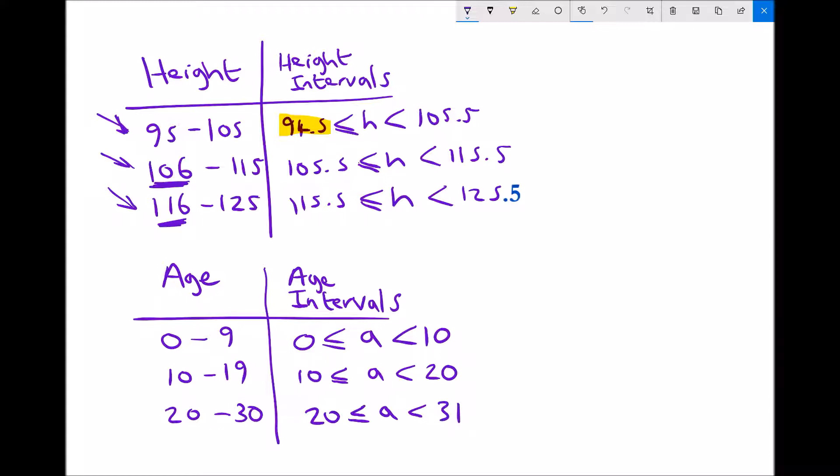The reason we need to do this with continuous data is because when we plot a histogram we mustn't have any breaks. A histogram needs to range from our upper boundary to our lower boundary with no gaps. Every piece of data within the range must fit into an appropriate group or more accurately into an appropriate interval class.